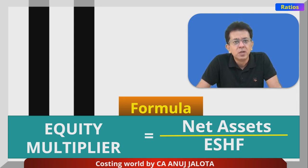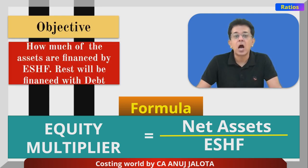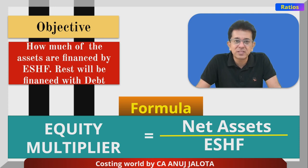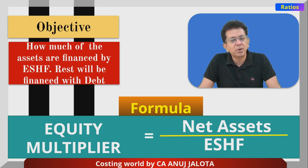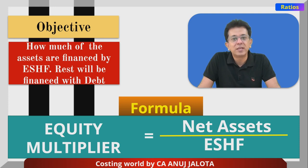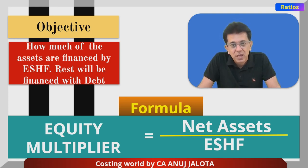The formula of the Equity Multiplier is net assets upon equity shareholders' funds. This tells us how much of the assets are financed by equity shareholders. There are two forms of capital — shareholders' funds and debenture capital. If the ratio is 2:1, that means out of two rupees of assets, one rupee is financed by equity shareholders, and the other half by debt.